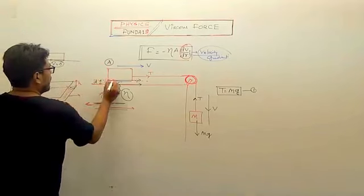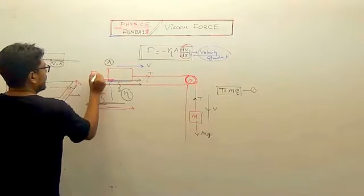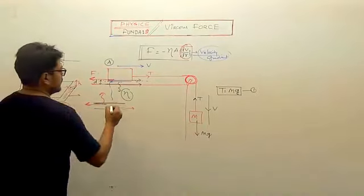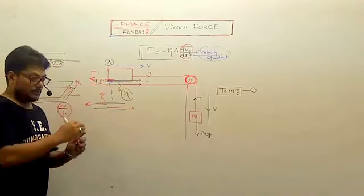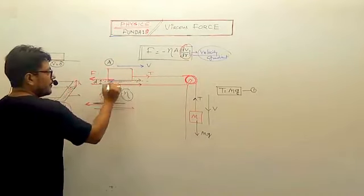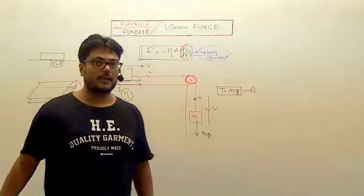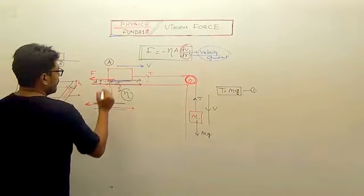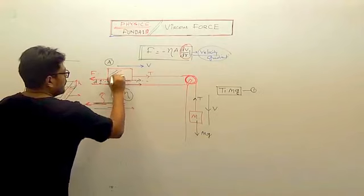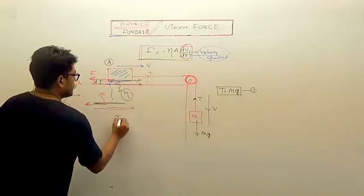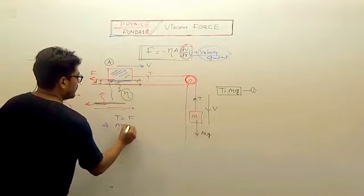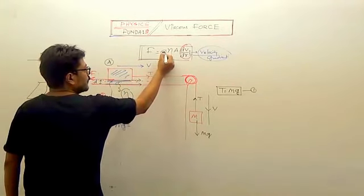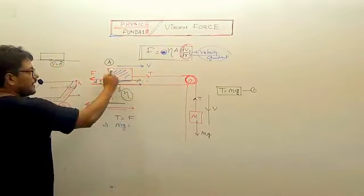There will be a viscous force behind it, which we can call F. This is the trick to solve these questions about viscosity. The net force on this should be zero, so T should equal this viscous force. T is Mg, so Mg equals F, the viscous force.